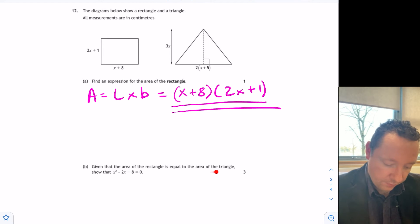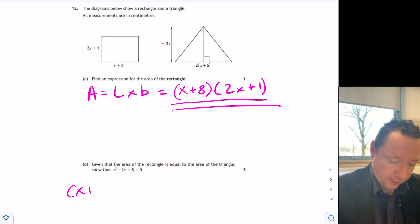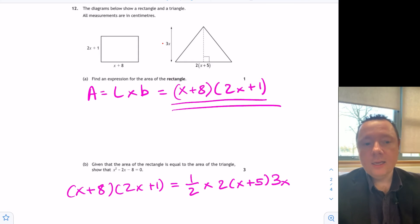Part B, given that the area of the rectangle equals the area of the triangle, show that this. Now, we'll try to get there, but we don't know how to get there. But it does say area of rectangle equal area of triangle. So we know the area of the rectangle is x plus 8 and 2x plus 1. And that equals the area of a triangle, where a triangle is half times the base, 2x plus 5, times the height, 3x. So we can write there equal to each other.